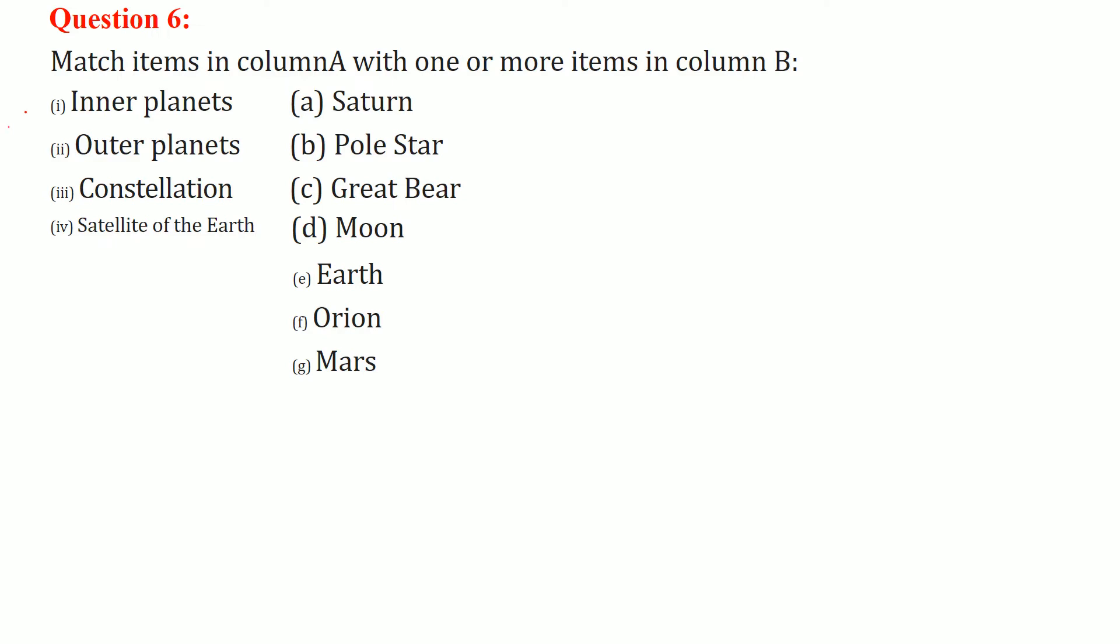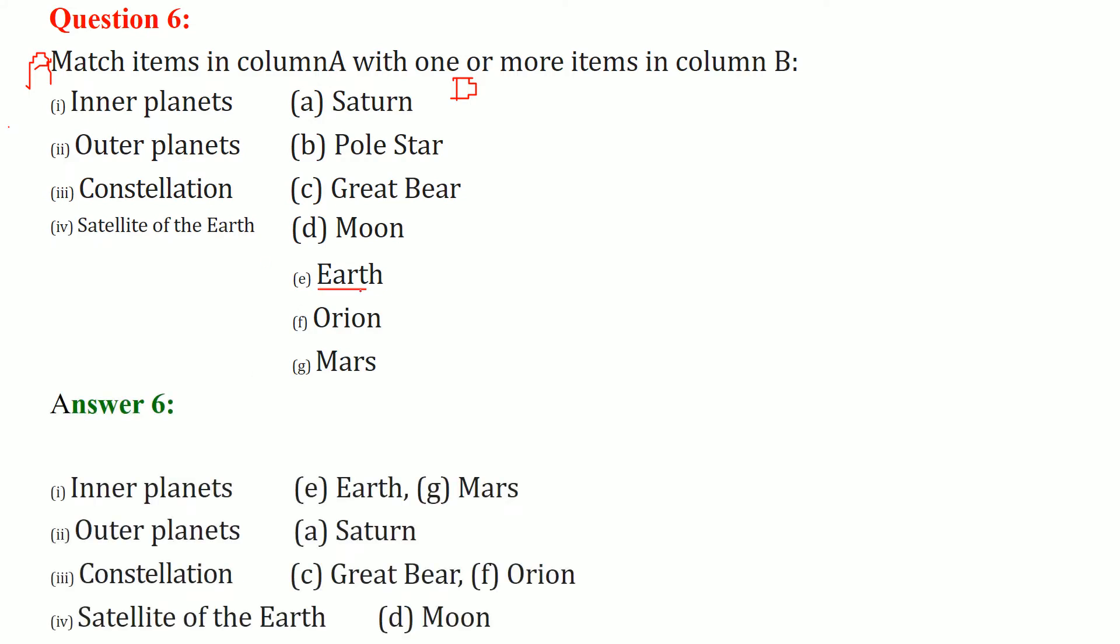We will match column A with column B. Inner planets - which are the inner planets? These are Earth and Mars. Outer planets are Saturn. Then the constellation is Great Bear and Orion. Then satellite of the Earth is Moon. This is how we match.